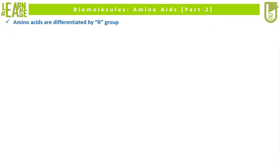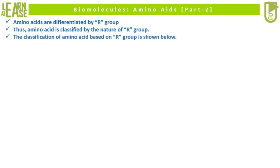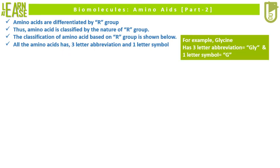Amino acids are differentiated based on their R group. Thus, amino acids are classified by the nature of the R group. The classification of amino acids based on the R group is shown below. All amino acids have a three-letter abbreviation and a one-letter symbol.